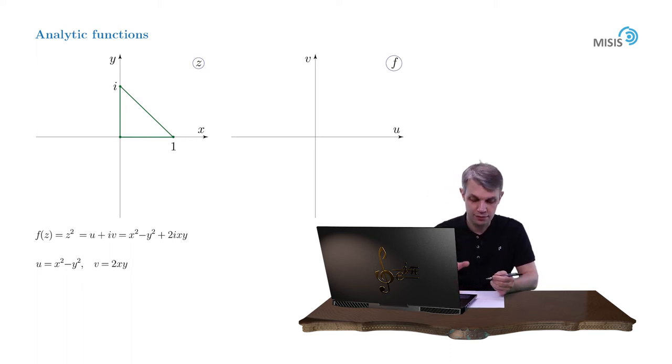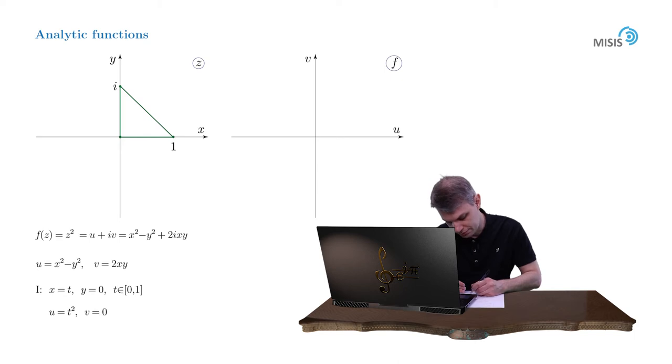But now we simply study how three different segments are transformed. For example, the horizontal segment from 0 to 1. We introduce a parameterization x equals t, y equals 0 and t changes from 0 to 1. Then in the new complex plane we'll obtain u equals t squared while v equals 0. And we see that it is transformed into a horizontal segment of unit length starting at point zero and pointing to the right.